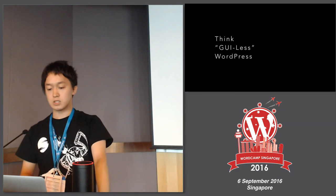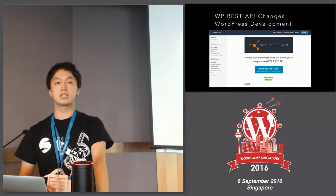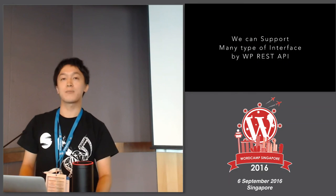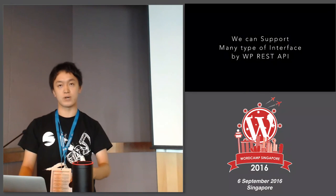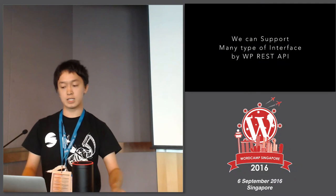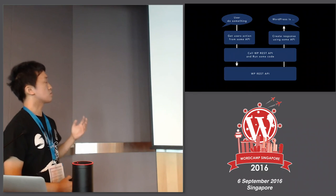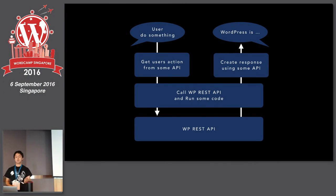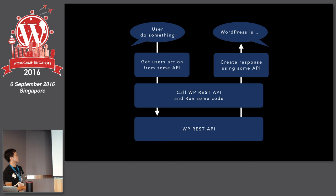Finally, think about GUI-less applications. WP REST API changes WordPress development. We can support many types of interfaces by the WP REST API — not only GUI, but also voice interface, motion, touch, and CLI. You can say something, touch something, or move something. Services like Kinect, Alexa, or Google API capture user actions, convert them to strings or queries, run some code, and call the WP REST API. WP REST API can save posts, get posts, post comments, or create new multisites.